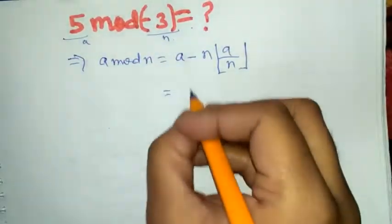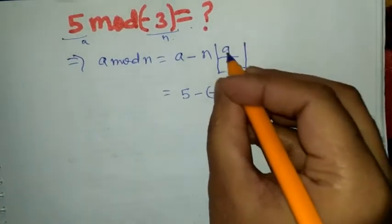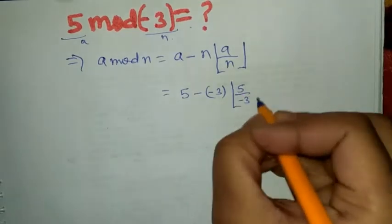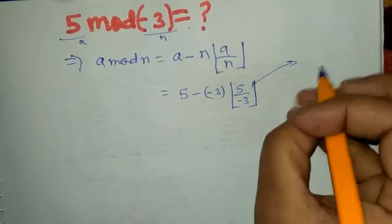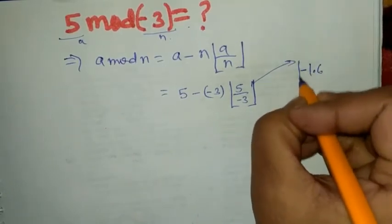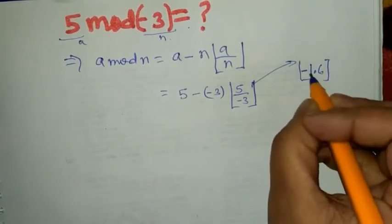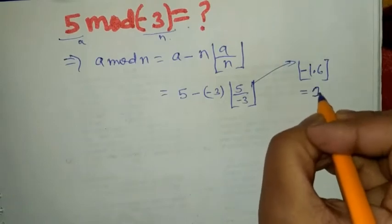So 5 minus minus 3, which will be 5 minus 3. Let's find this value. This will be minus 1.6, and we need the floor value of this. The floor value will be minus 2.